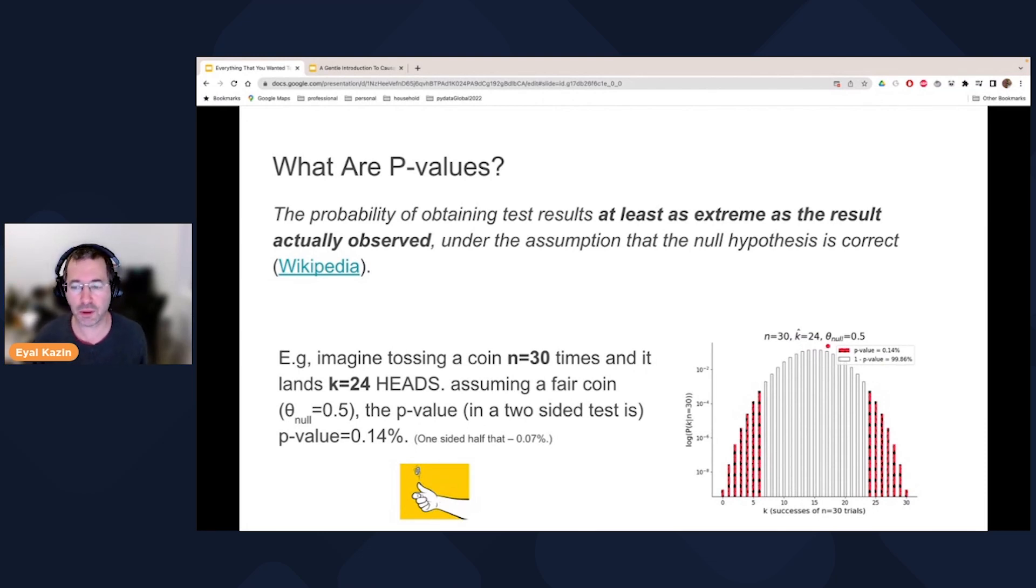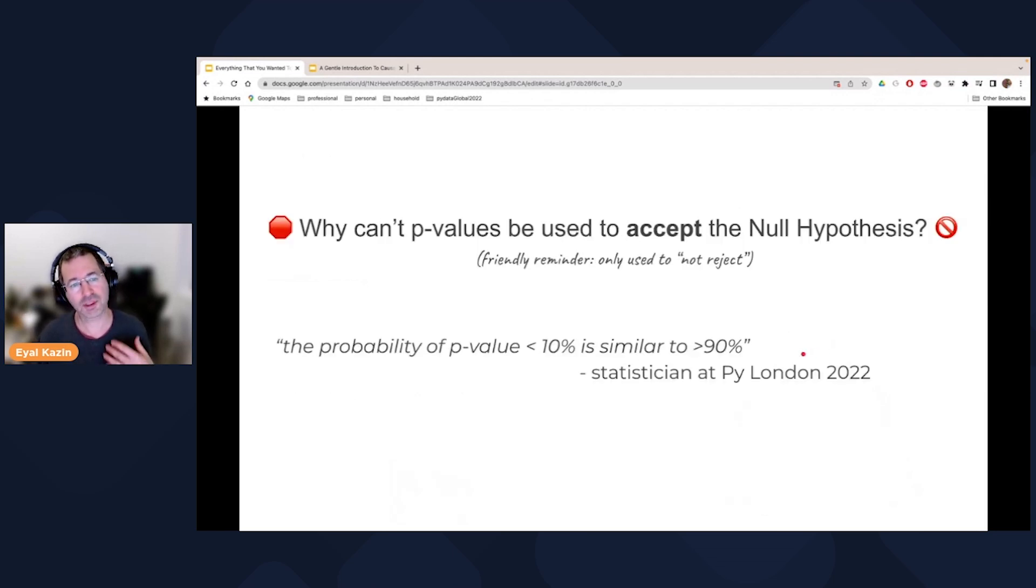So most of you already know this, but what I was wondering is why in all the textbooks, they mentioned that we can use it to reject the null hypothesis, but again, not to accept it. For example, Bayesian methods, you can be used to accept it.